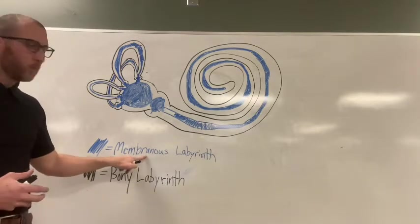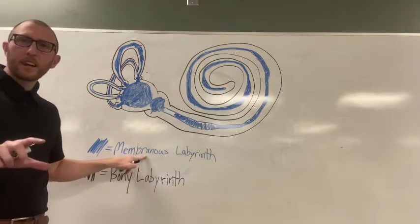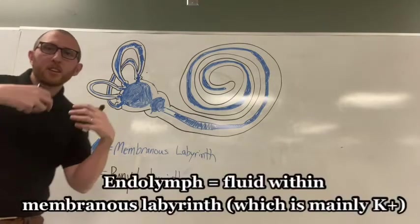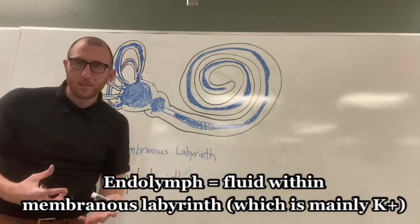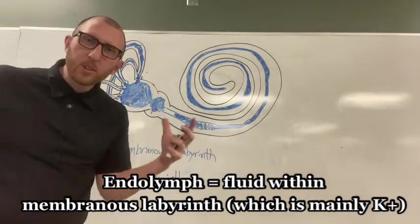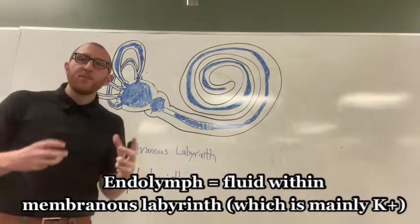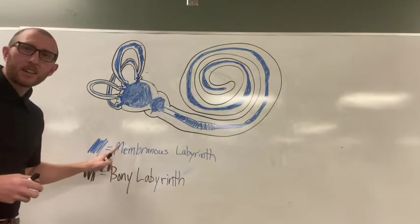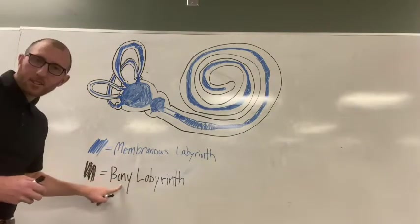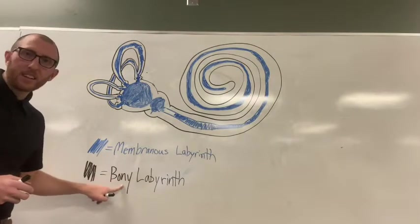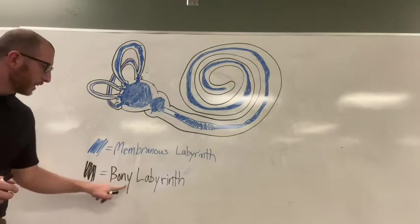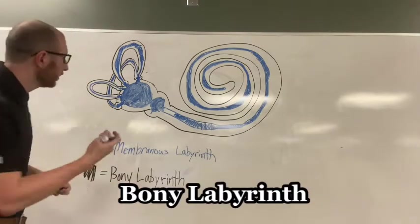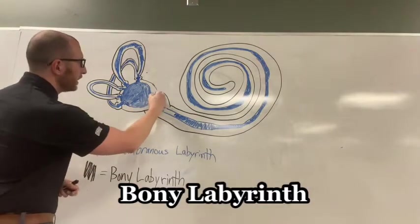Within the membranous labyrinth, it's filled with endolymph — this is the fluid that fills up the membranous part. There's also a second component called the bony labyrinth.